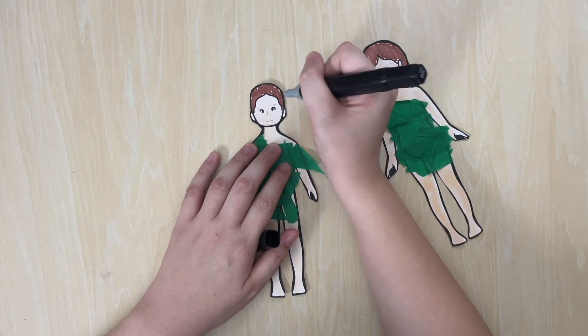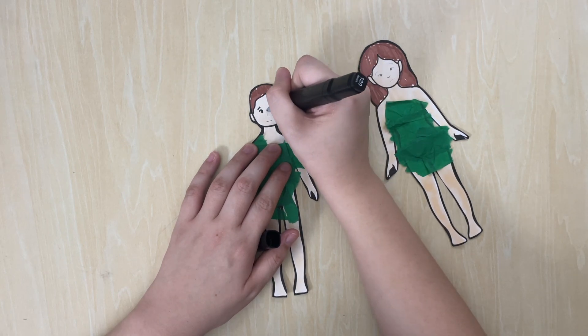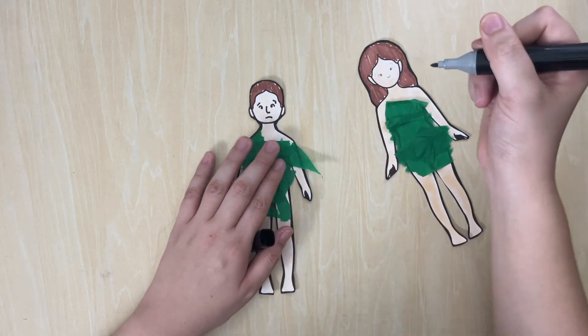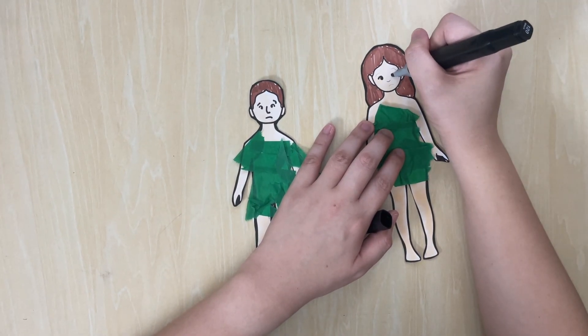Next grab a marker or a pen and draw some faces on your paper dolls. So I'm drawing sad faces because they were guilty and ashamed and they were hiding from God.